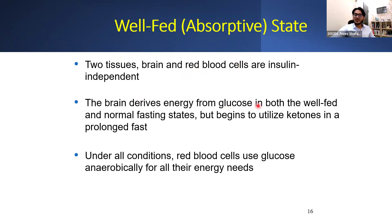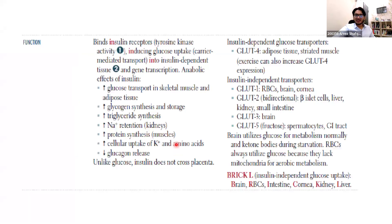The brain derives energy from glucose both in well-fed and normal fasting conditions, because fatty acids cannot cross the blood-brain barrier. However, the brain begins to utilize ketones in a prolonged fast. Under all conditions, because the red blood cells lack mitochondria, they always use glucose anaerobically for all their energy needs. This is a summary of the effects of insulin: it stimulates glucose transport in skeletal muscle and adipose by GLUT4, stimulates glycogen synthesis and storage, stimulates triglyceride production, stimulates sodium retention, stimulates protein synthesis, stimulates cellular uptake of potassium, and decreases glucagon release.